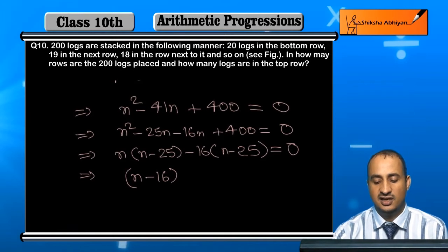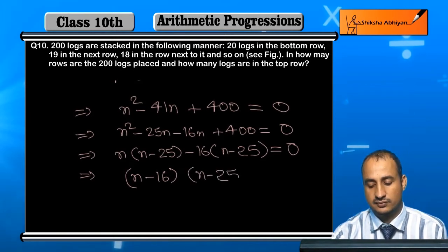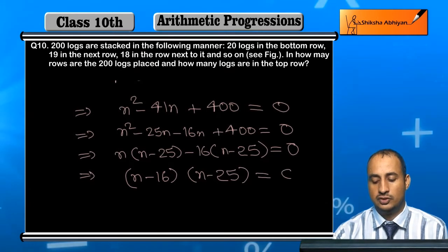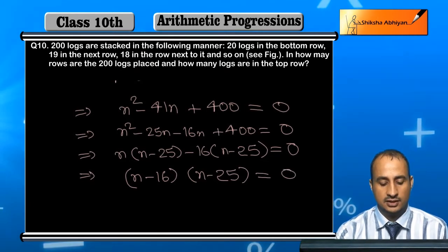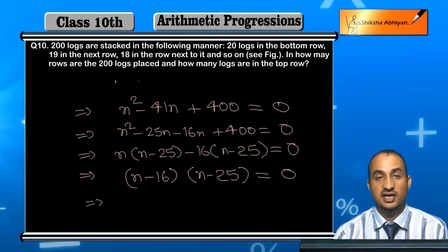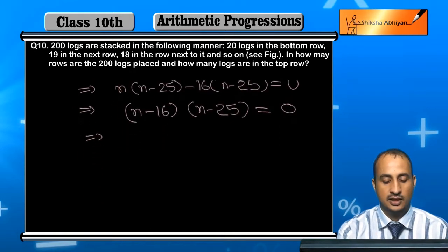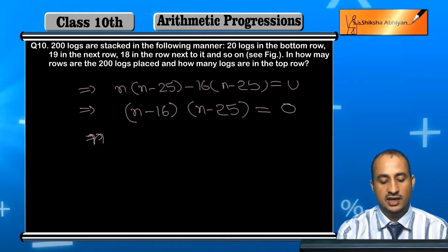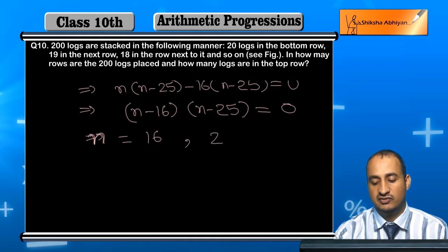So (n minus 25) equals 0 or (n minus 16) equals 0. Since n minus 16 and n minus 25 are here, n can be either 16 or 25. So n is equal to either 16 or 25.